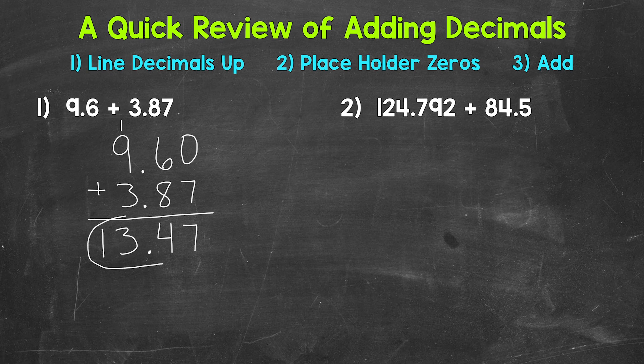Let's move on to number 2, where we have 124 and 792 thousandths plus 84 and 5 tenths.